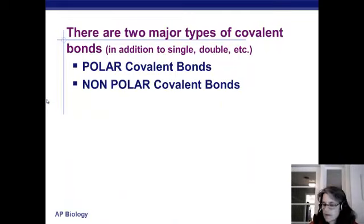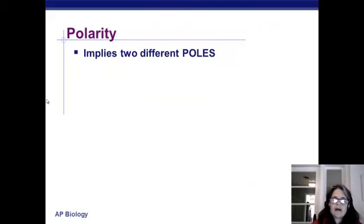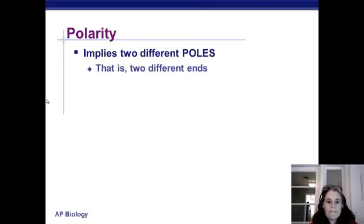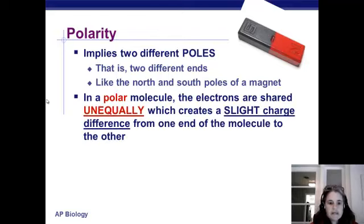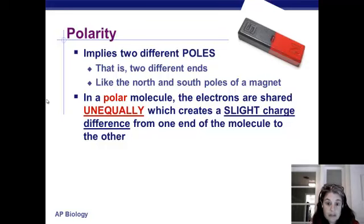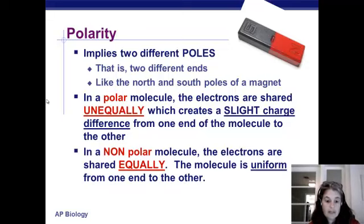Polar versus nonpolar covalent bonds. When we talk about polarity, we're implying that something has two different ends or two different poles, much like a magnet has a north pole and a south pole — two opposite ends. A polar molecule has two ends, and what makes the two ends different is they have a slightly different charge. One end is slightly positive, while the other end is slightly negative.